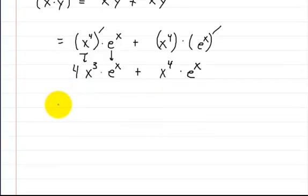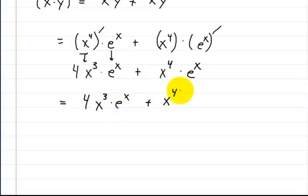So now, there's not too much to do there, so we're just going to write that down as 4x^3·e^x + x^4·e^x. And that's what you would get for this function during the product rule.